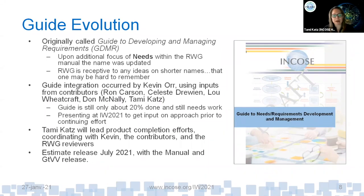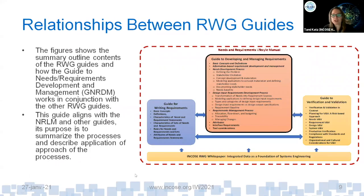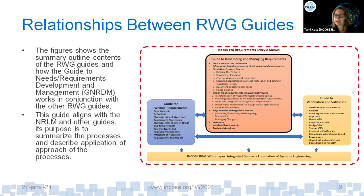I don't want to falsely constrain Raymond with the work he's doing on his guideline. I'm still planning on releasing this guideline this summer — there's enough content to pull together. It's just a matter of how we structure it. We're tying closely to the manual, which is in great shape. We'll use feedback to continue maturing it. There's a figure showing the different requirement working group guides. The needs and requirements lifecycle manual encompasses all of this; then there's the guide for writing requirements already released, and the guide to verification and validation that Raymond presented yesterday.